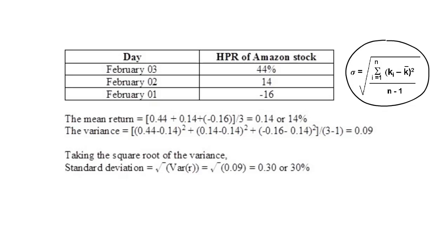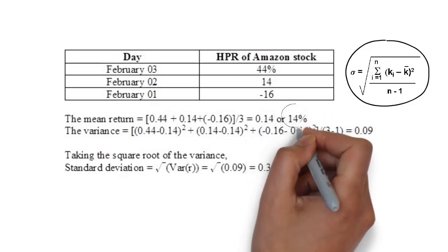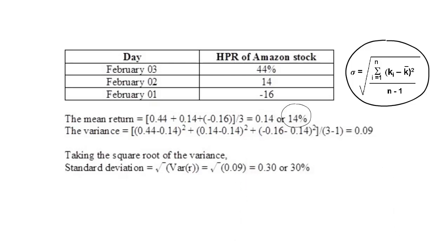The calculations are as follows. The mean return would be, you simply add the three HPRs and divide by 3. You get 14%. The variance would be, each return minus the mean return and then square it. And then finally, you add those three up and divide it by n minus 1.